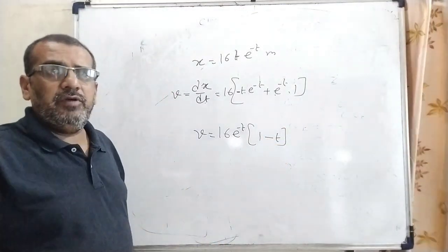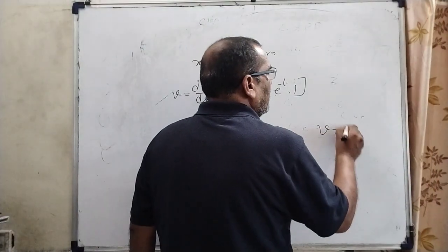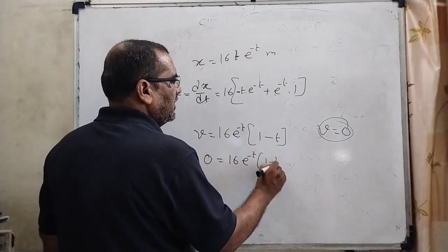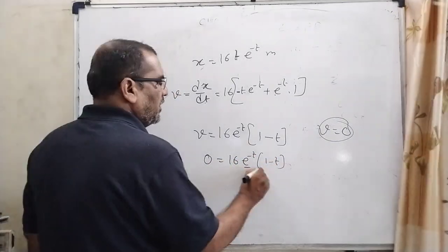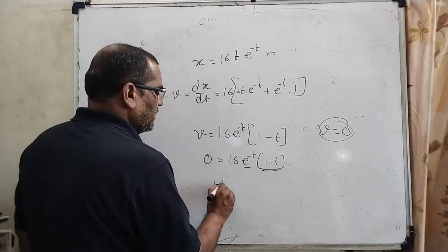Here in the question, given that momentarily stopped - what does it mean? It means velocity equal to 0. So therefore v = 0: 16e^(-t)(1 - t) = 0. It means the product of these values will be 0. So 1 - t = 0.